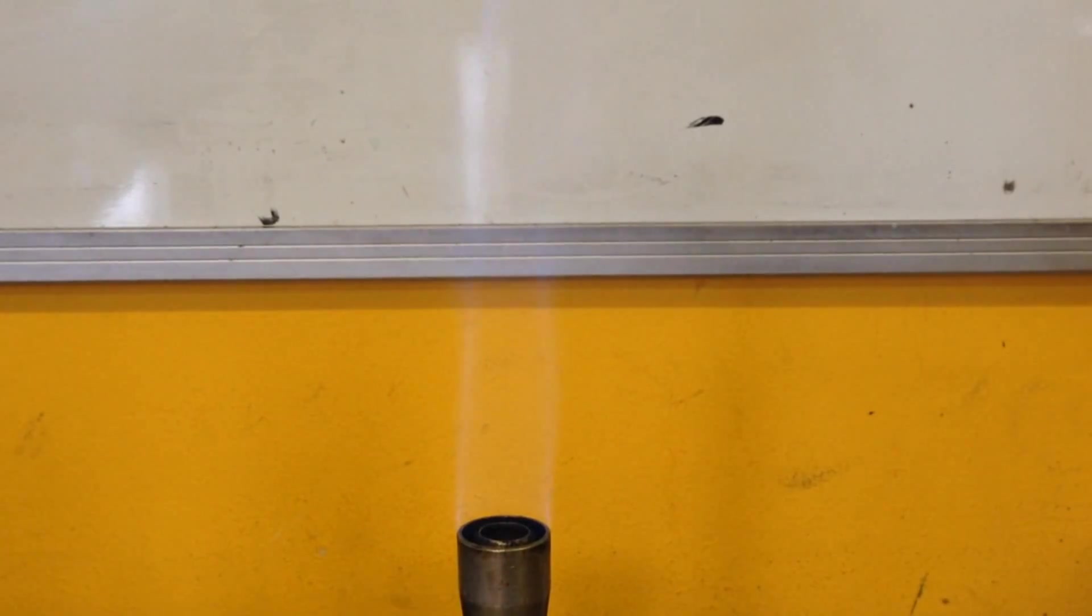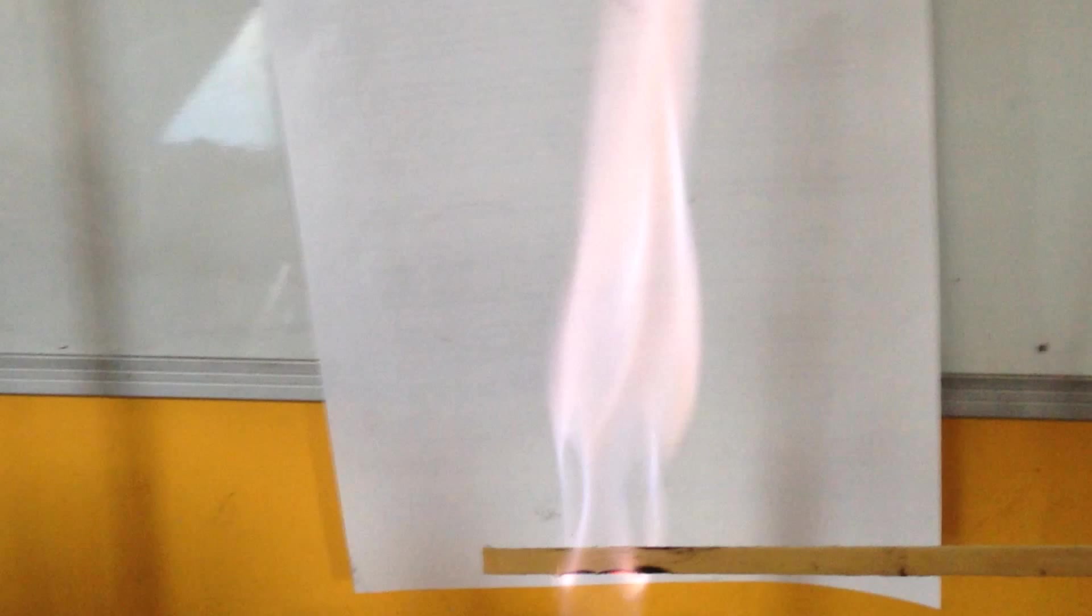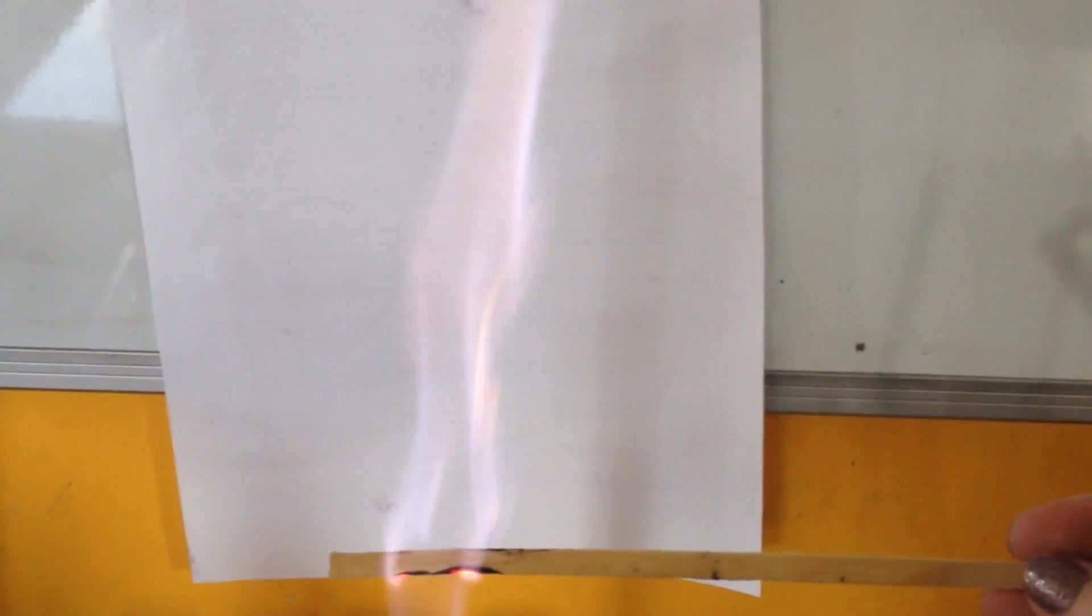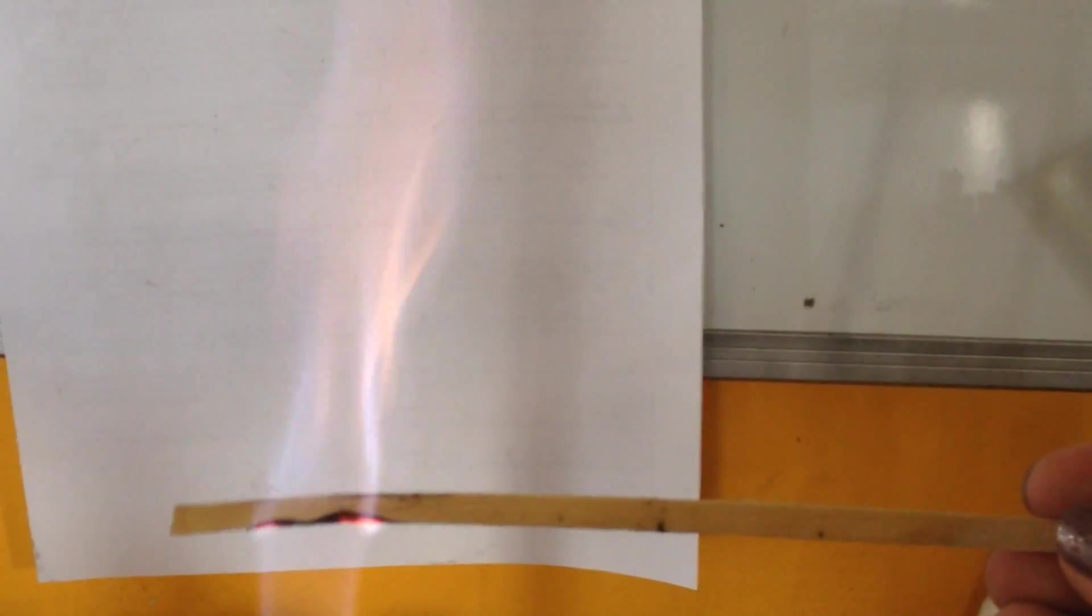Then we have potassium. This is a nice one, potassium. Maybe slightly harder to see, but it's actually giving a lilac flame. This is potassium here, burning with a lilac flame. I know you may dispute some of my descriptions of colors, but these are the colors that the exam board wants you to use.